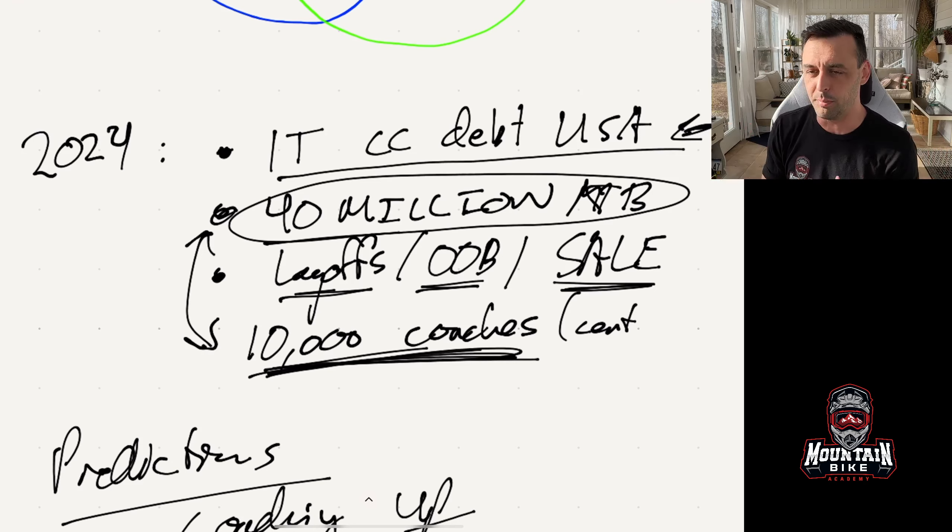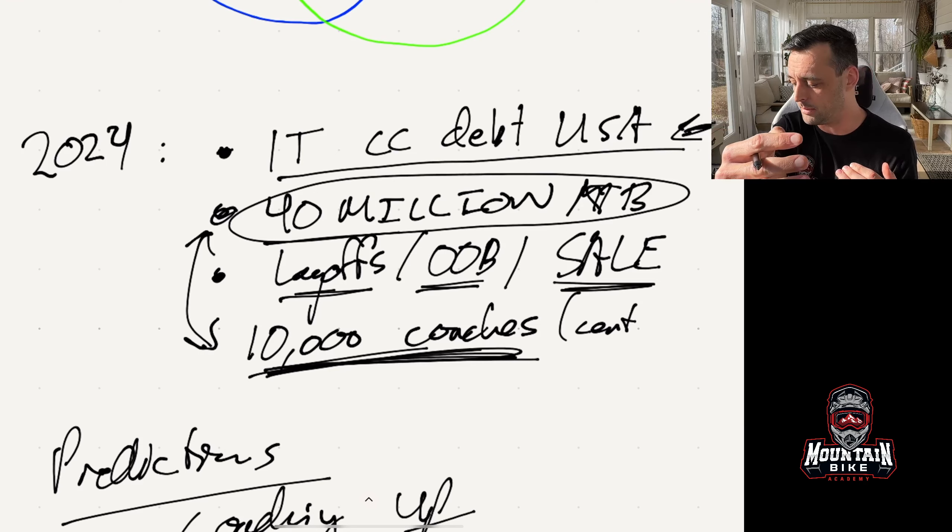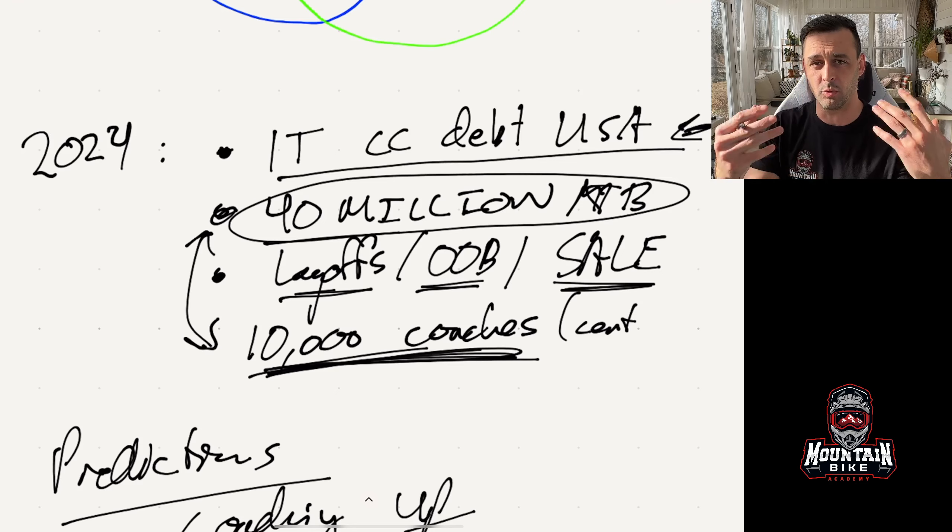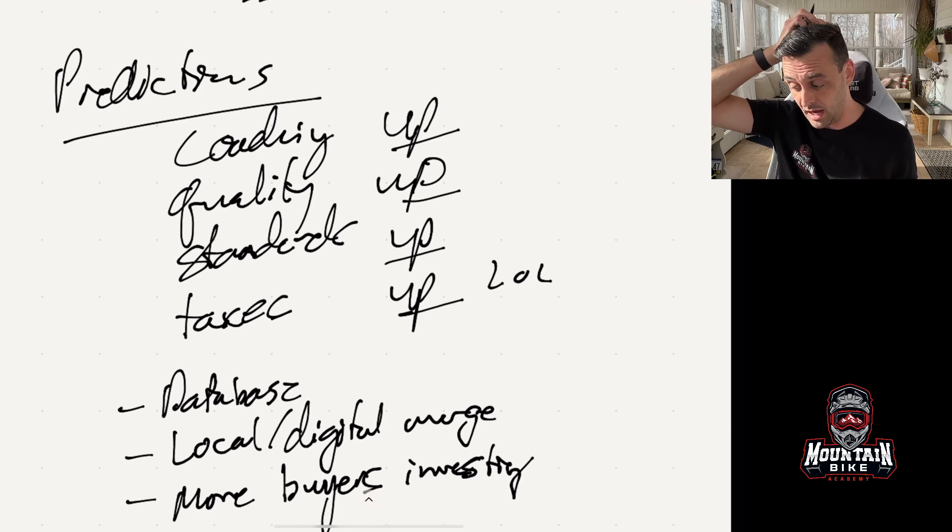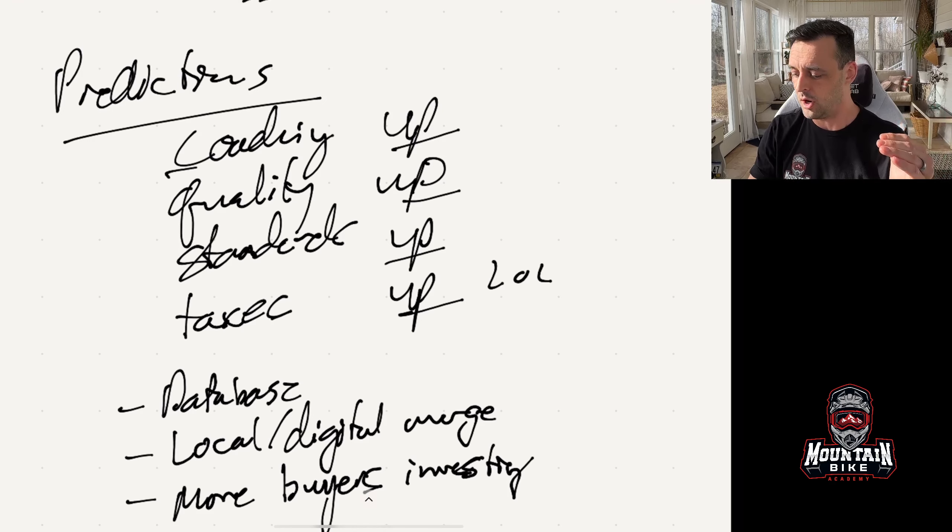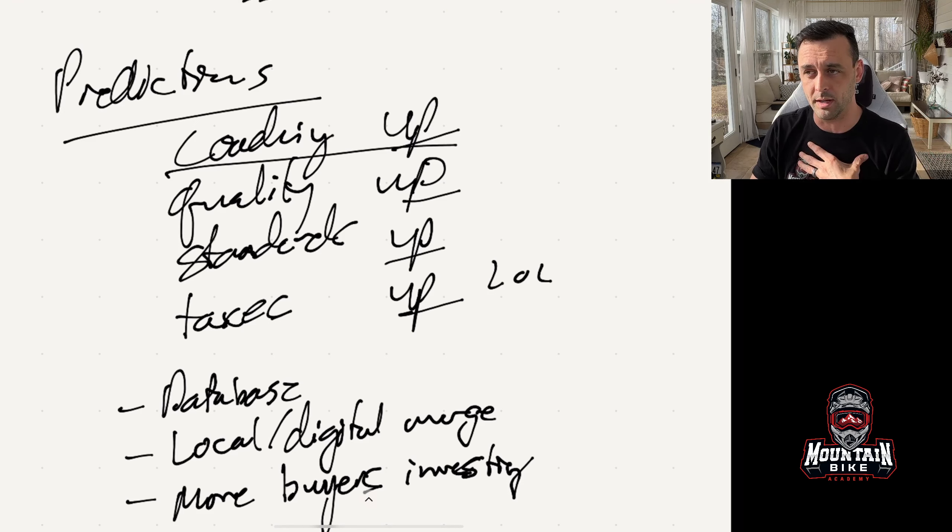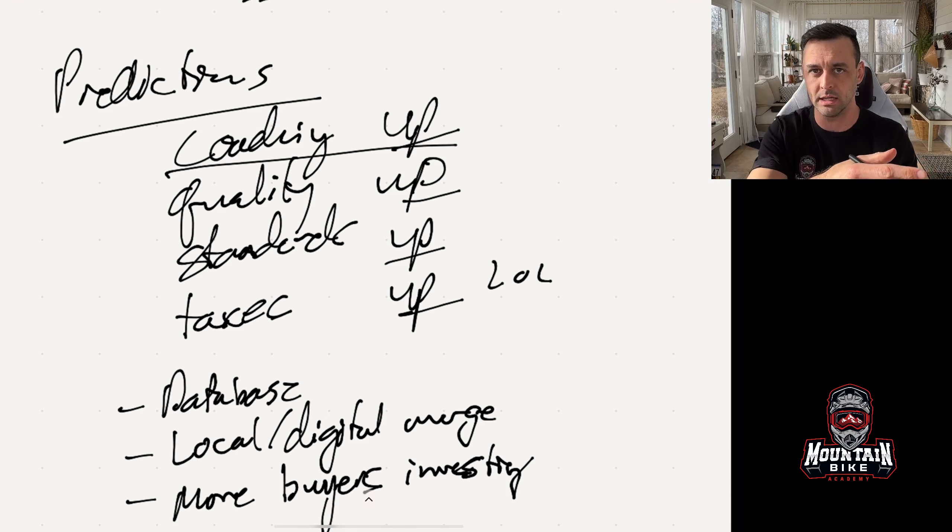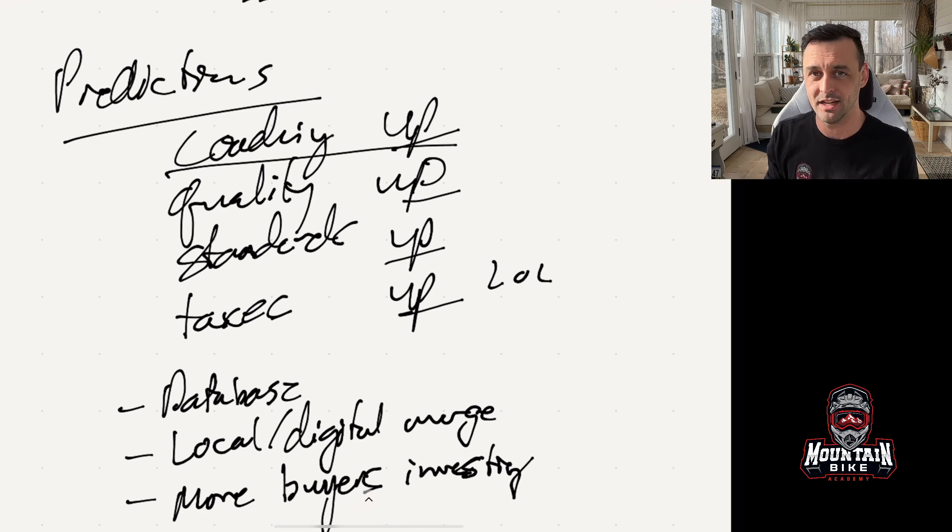And even if that is a little bit inflated, 30 million of them probably are really more die hard than not. I know that there's at least probably about 10,000 certified coaches from maybe the PMBI, the BICP. I believe that the BICP, please don't quote me on this, I believe they've certified over 3000 instructors. And I think that there's at least if not more than that with the PMBI. So we have 10,000 coaches to 40 million mountain bikers.